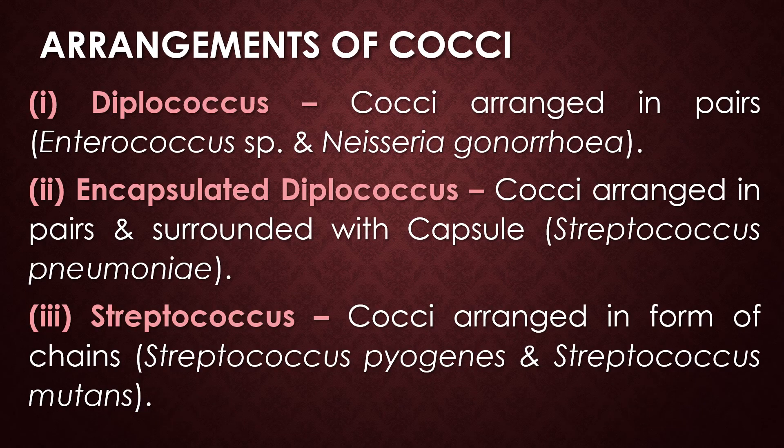Regarding the arrangement, cocci are available in six different arrangements. The first one is diplococcus — that is, cocci arranged in the form of a pair. The examples for diplococcus are Enterococcus species and Neisseria gonorrhoeae. The second type of arrangement is encapsulated diplococcus — cocci arranged in pairs and surrounded by a capsule. The example for this encapsulated diplococcus is Streptococcus pneumoniae, widely known as Pneumococcus.